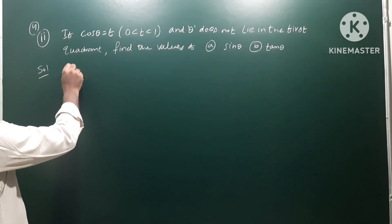Okay, next problem. If cos θ is equal to t, where t lies between 0 and 1, and θ does not lie in the first quadrant, find the values of sin θ and tan θ. So let us see, first of all write given.